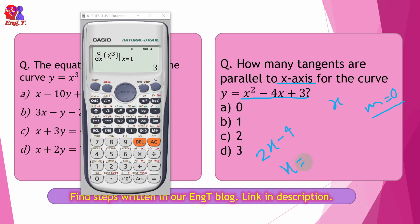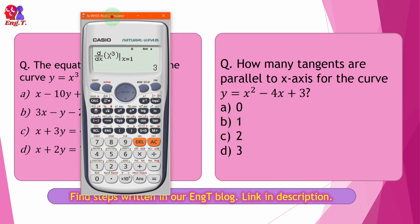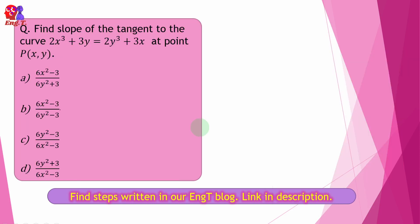The derivative of the function is 2x minus 4, and the derivative value is 2x minus 3. Setting this equal to zero for the x-axis condition gives us the required values.